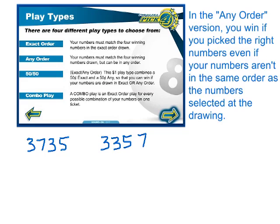Because you picked 2 threes, a 7 and a 5, and those are the same numbers that appear. They just happen to be in a different order. So in the Any Order game this is a win, whereas in the Exact Order game this is a loss.